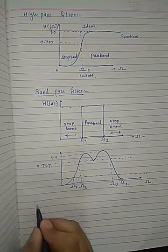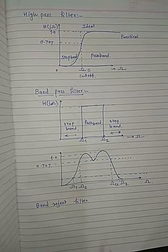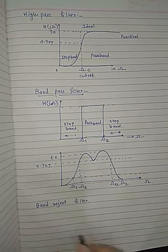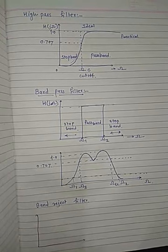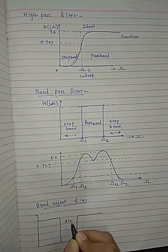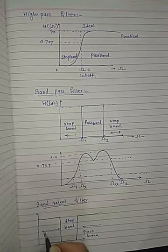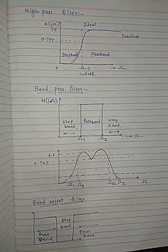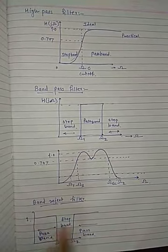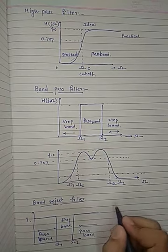In the case of the band reject filter, it rejects all the frequencies between Ω_1 and Ω_2 and allows all the remaining frequencies. The ideal response for the band reject filter is shown here. This is the stop band for the band reject filter and this is the pass band. These are the frequencies Ω_1 and Ω_2; it will pass all frequencies except those between Ω_1 and Ω_2. This is the ideal frequency response.